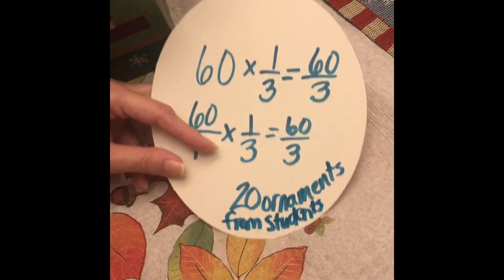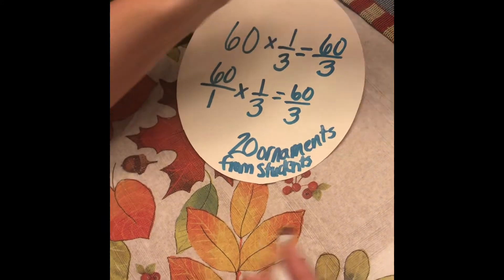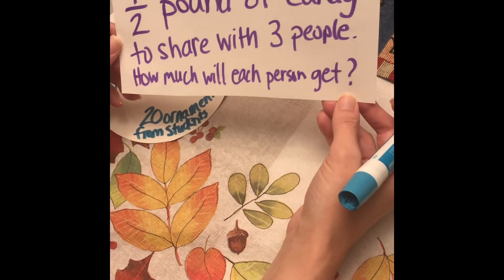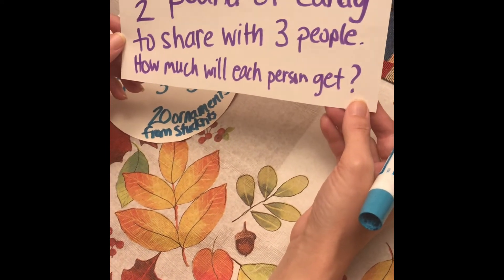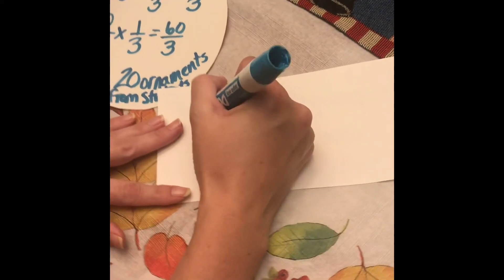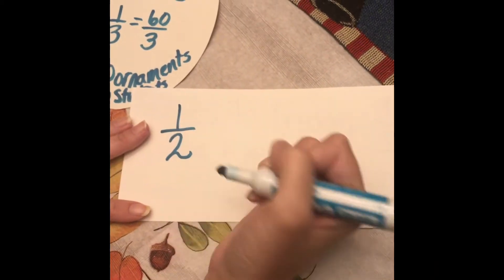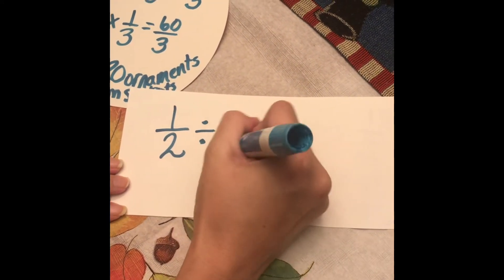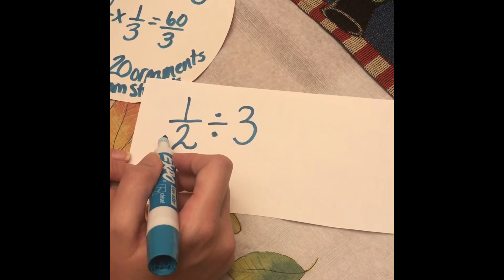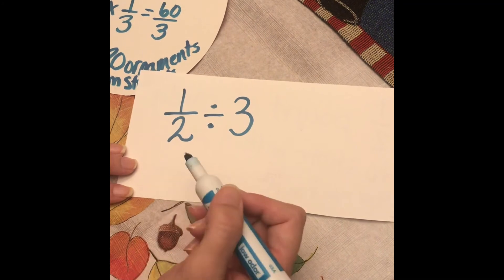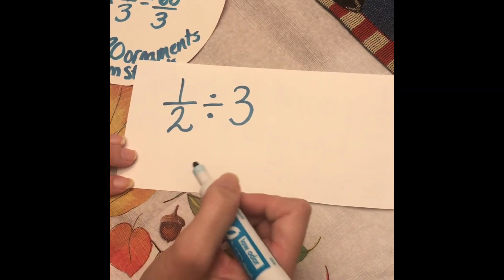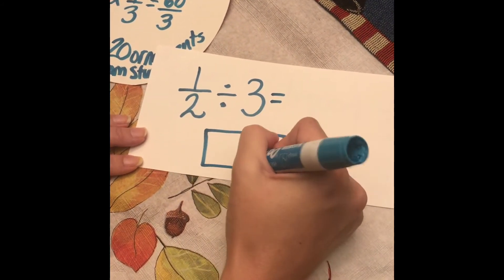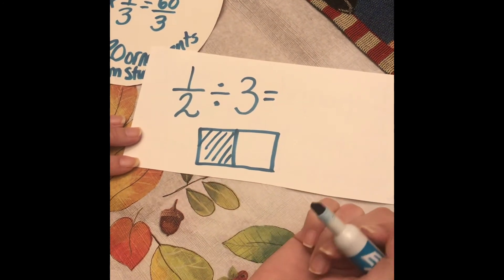Now let's check the last problem. I had half a pound of candy to share with three people. How much will each person get? I've got half a pound, and "sharing" is a key word that tells us we need to divide — dividing it between three people. Since I only have half a pound, they're going to get less than half because I'm splitting a small amount between three people.